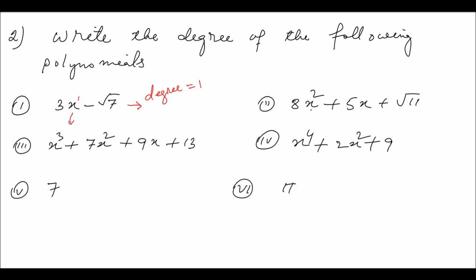Question number two: the variable is x. The highest power of x is two, so the degree equals two. Therefore the degree of this polynomial equals two. For the next one, the variable is x with powers one, two, and three — the highest power is three — so the degree equals three. The degree of this polynomial is three.